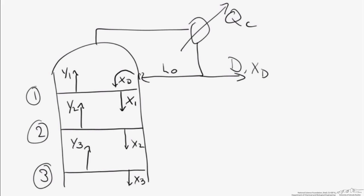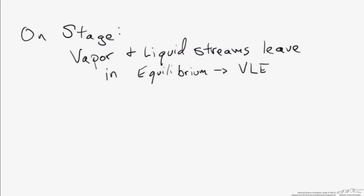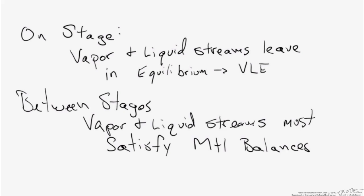Now we have the basics set up for a column. On each stage, we have vapor-liquid equilibrium, and that's what's actually driving the separation — we have different concentrations of the vapor and the liquid. We use vapor-liquid equilibrium to define what the compositions are on each stage of the column. But if we look at what's going on between those stages, we also have the additional criteria that the vapor and liquid streams must satisfy the material balances and also the energy balances.